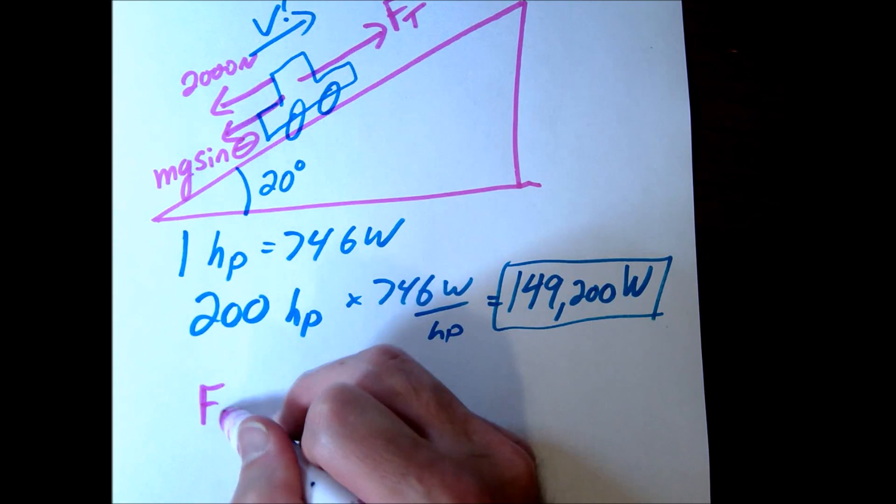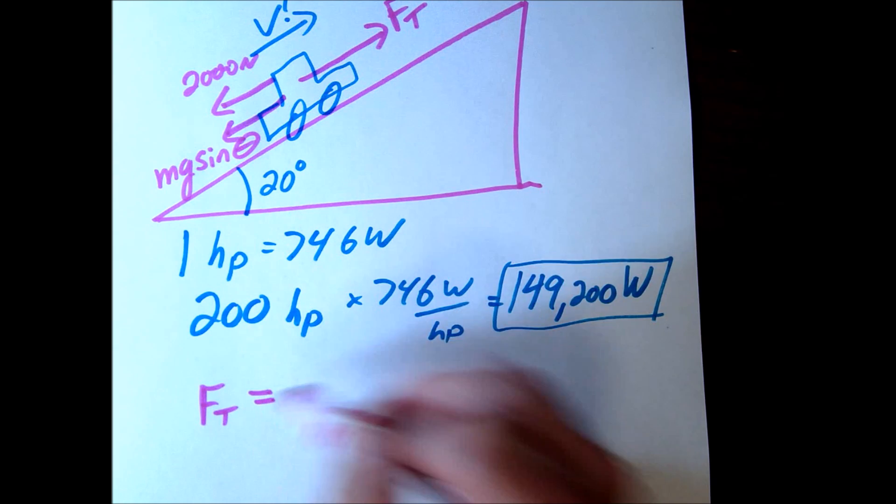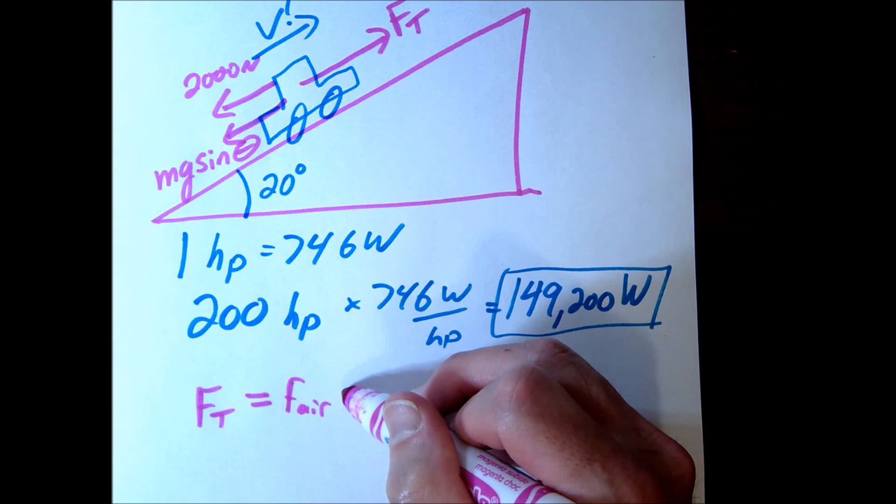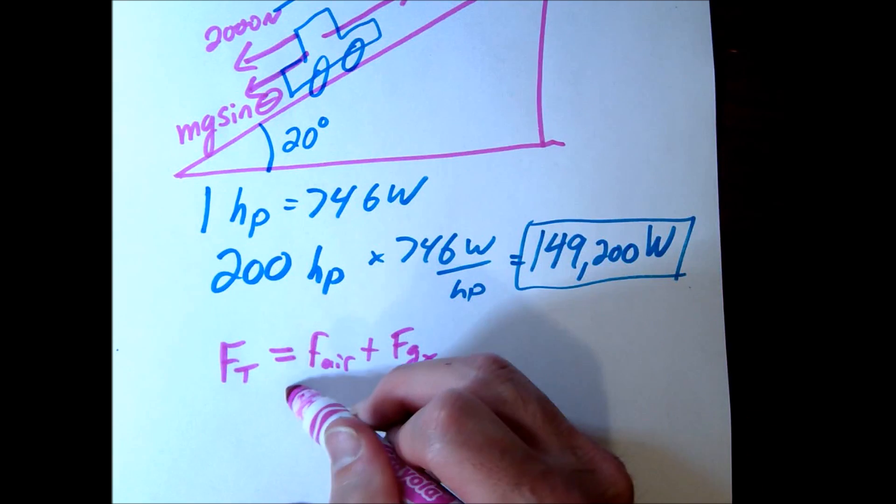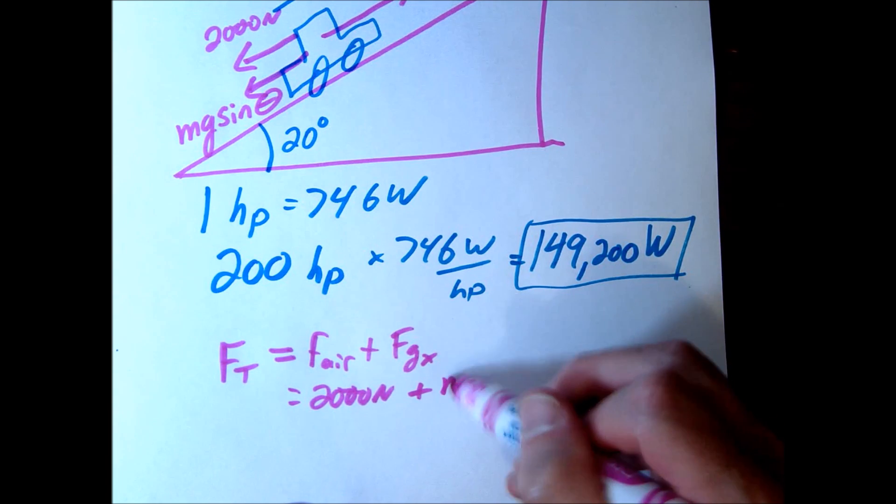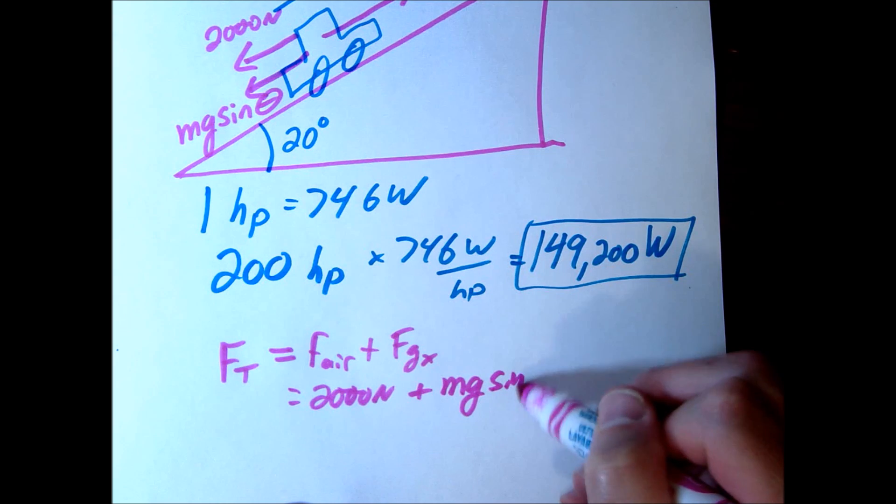So we know that our thrust force has to be perfectly balanced with the air resistance, force of air, and the force of gravity in the x-direction. Our force of air resistance was 2,000 newtons. This would be again mg sine of theta.